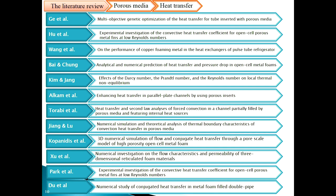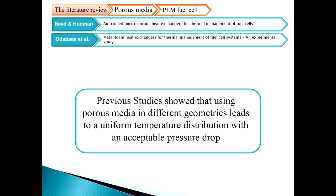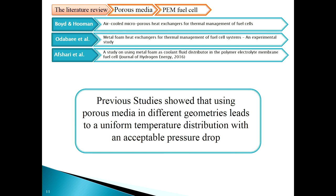There is previous literature on using porous media for cooling systems in different geometries, though not in fuel cells. There is also experimental work on using metal foam heat exchangers for thermal management of fuel cell systems, but it was a laminar flow case. We also have a paper in the Journal of Hydrogen Energy where we studied using metal foam as a coolant flow distributor in a polymer electrolyte membrane fuel cell — but that work was also laminar flow. Previous studies showed that using porous media leads to a uniform temperature distribution with an acceptable pressure drop.